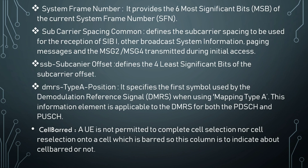SSB subcarrier offset defines the four least significant bits of the subcarrier offset. DMRS type A position is basically the first symbol used by the DMRS when using mapping type A, and this information element is applicable to the DMRS for both PDSCH and PUSCH.